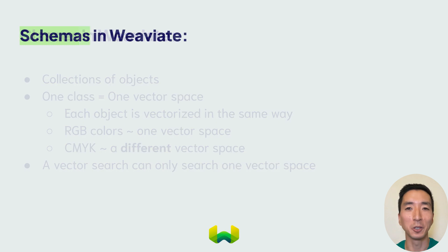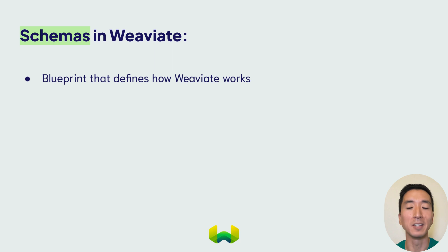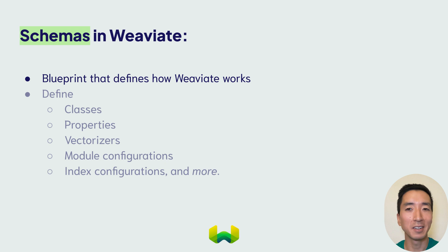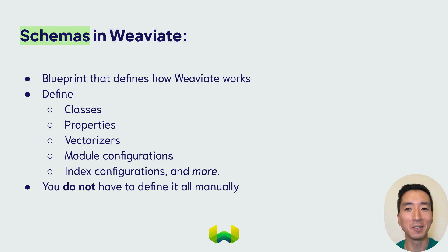Finally, let's touch on schemas. A schema in Weaviate is the blueprint that defines all the things we've talked about and more — its data structure, classes, properties, vectorizers, module configurations, index configurations, and more. You should know that thankfully you don't have to define every aspect of the schema manually. Weaviate has an auto-schema feature to best infer any missing information as required.